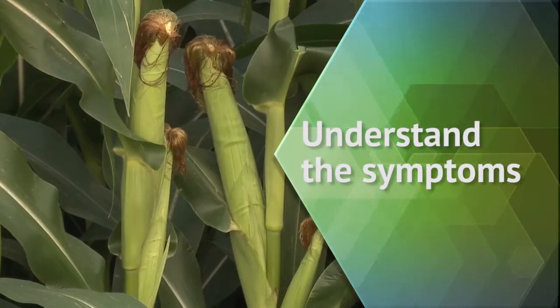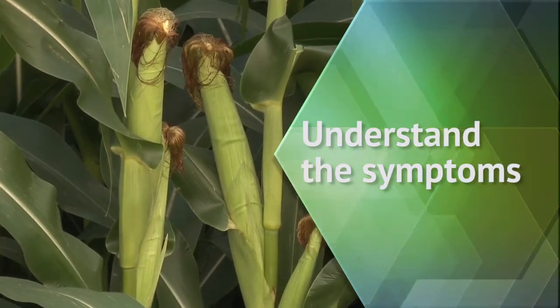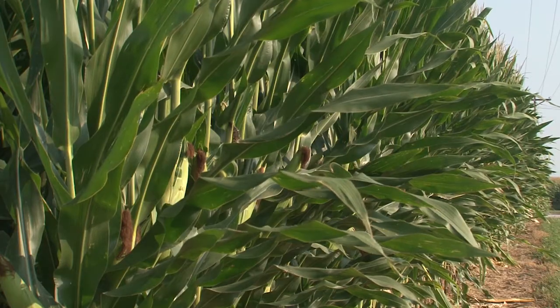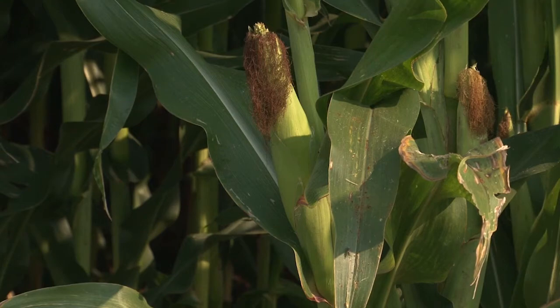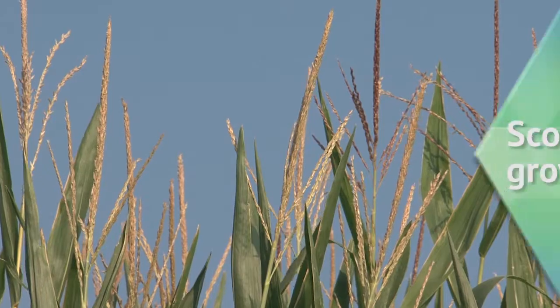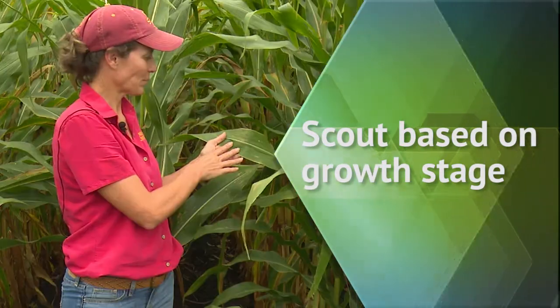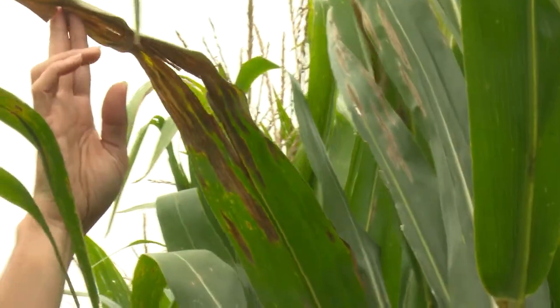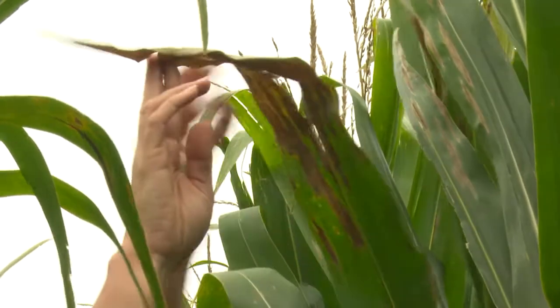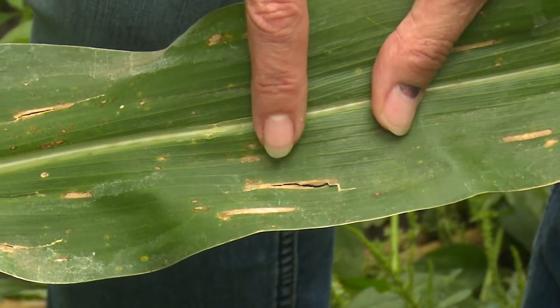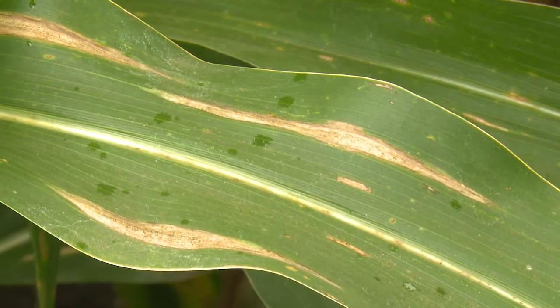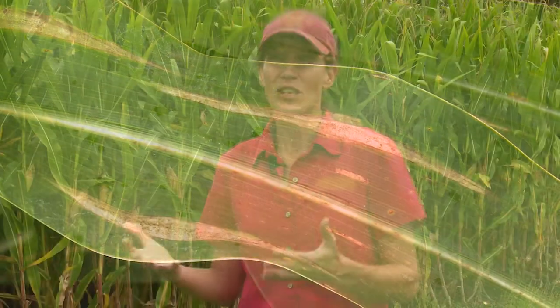Look for diseases — what you want to be doing is looking for symptoms. It's a good idea to know what you're looking for based on the growth stage of the crop. At tasseling, you should probably be looking for foliar diseases. The way we tell foliar diseases apart is by the shape of the spots. A rectangular spot is going to be gray leaf spot; a cigar-shaped spot will be northern corn leaf blight. Those are the symptoms that help us distinguish what the disease is.